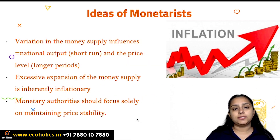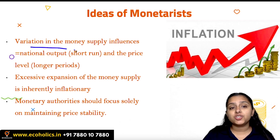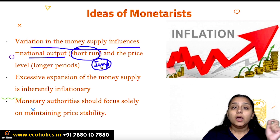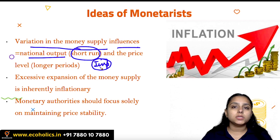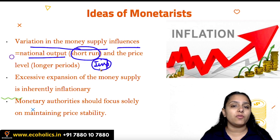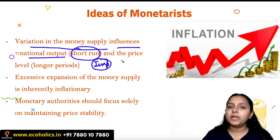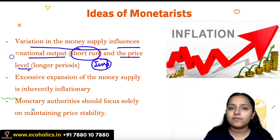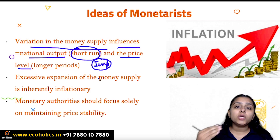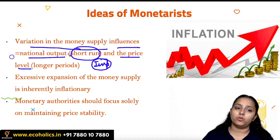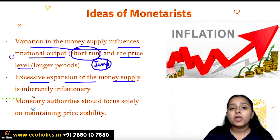An important point to remember: variation in money supply influences national output, but only in the short run. According to monetarists, monetary policy can affect the level of output in the short run, whereas in the longer run, money supply stops influencing output and only affects the price level — just as in the classical model. So according to monetarists, continuously increasing money supply in the long run only brings inflation.